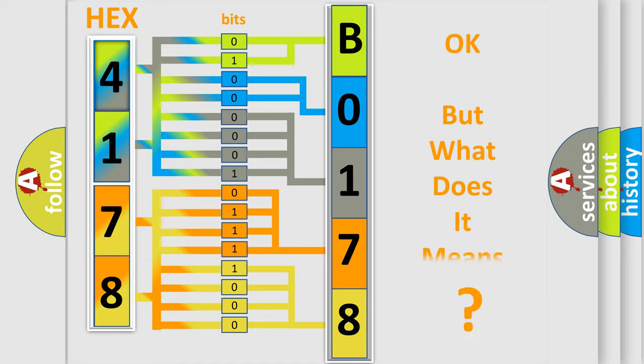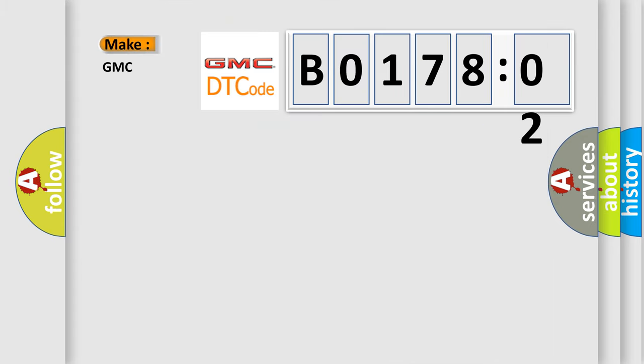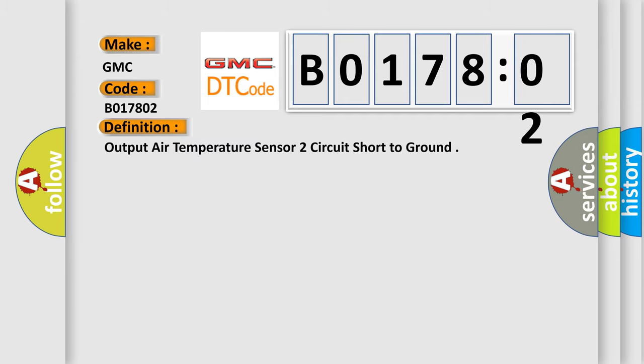The number itself does not make sense to us if we cannot assign information about what it actually expresses. So, what does the diagnostic trouble code B017802 interpret specifically for GMC car manufacturers?